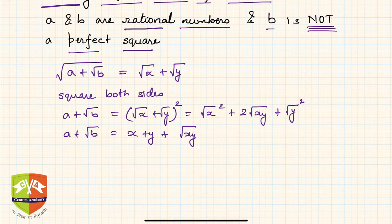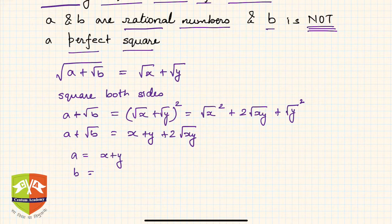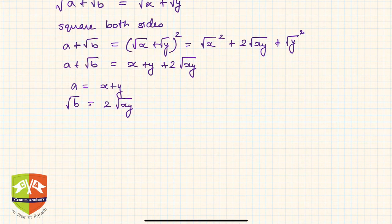From the equality of two surds, which we learned in previous sessions, we infer that the rational parts must be equal and the irrational parts must be equal. Therefore: a = x + y, and √b = 2√(xy), which means b = 4xy.